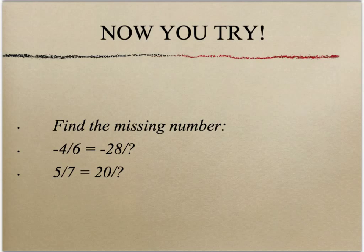Now it's your turn. I want you to find the missing number of negative 4/6 equals negative 28 over what? And then 5 sevenths equals 20 over what number?